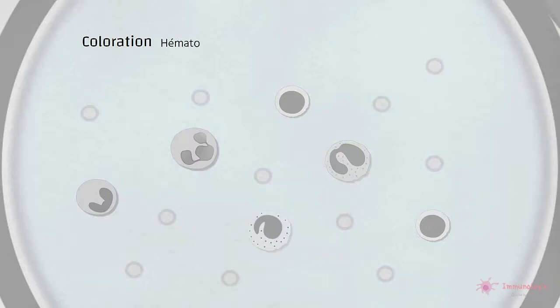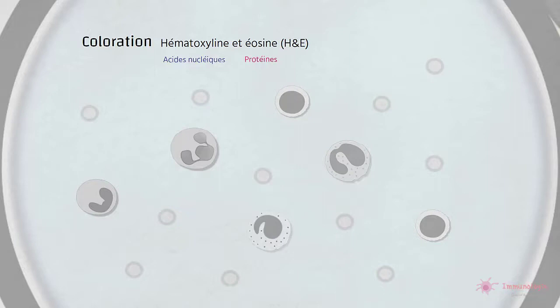Les hématoxylines et les éosines sont des colorants sensibles au pH, couramment utilisés en combinaison pour distinguer les types de cellules, dont les frottis sanguins et les tissus. Le colorant basique, hématoxyline, lie les acides nucléiques et colore en bleu. Le colorant acide, éosine, lie les protéines dans les granules et le cytoplasme, et colore en rose.